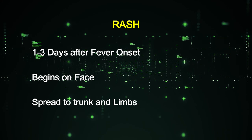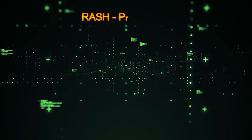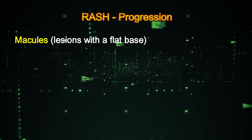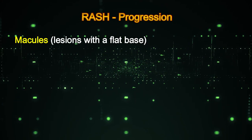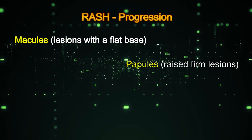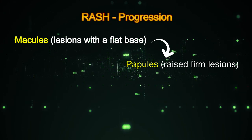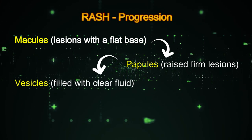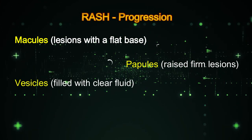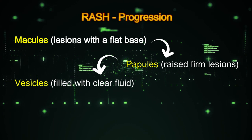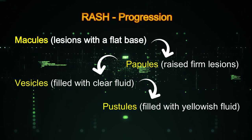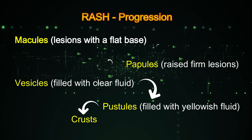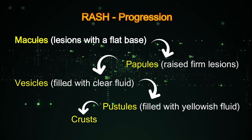The rash progresses through stages: it starts as macules — lesions with a flat base — then progresses to papules — lesions with a firm base — then to vesicles — lesions filled with clear fluid — and finally to pustules — lesions with yellowish fluid — before crusting off.